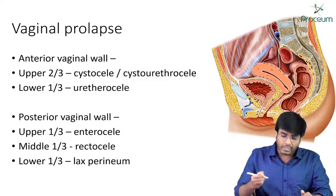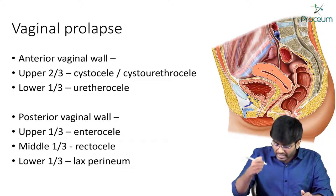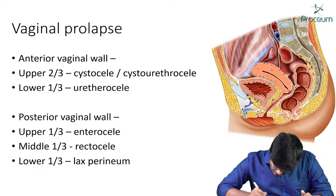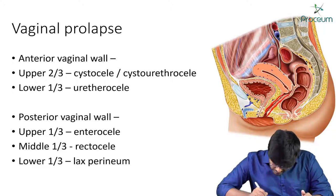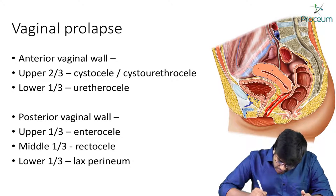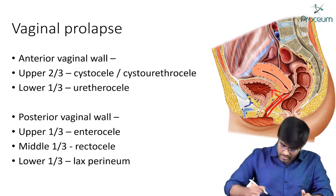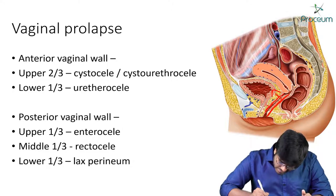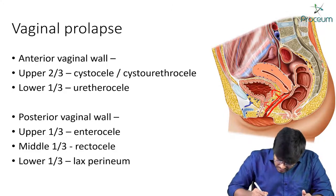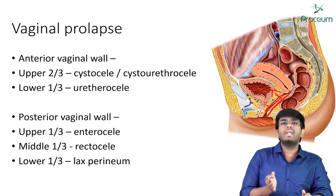Let me explain it simply with a diagram. The anterior vaginal wall is in relation with the urinary bladder anteriorly, and the lower part of the anterior vaginal wall is in relation with the urethra, also anteriorly.